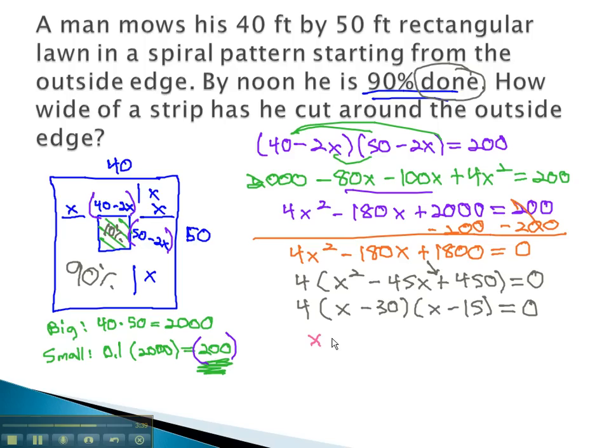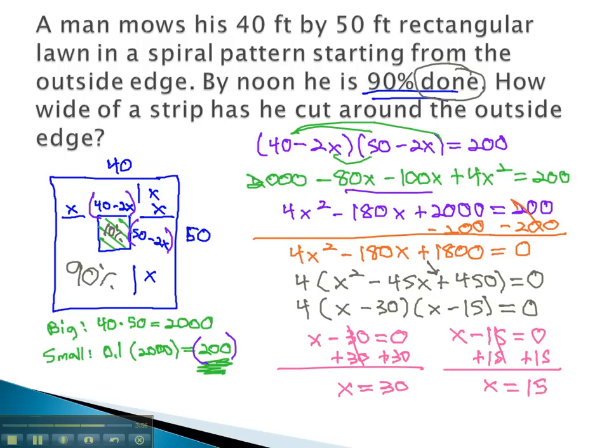We can now solve by setting each factor with x equal to 0, and solving each of those equations. Adding 30 to both sides tells us that one option for x is 30, and adding 15 to both sides tells us the other option for x is 15.